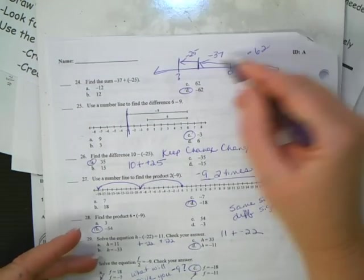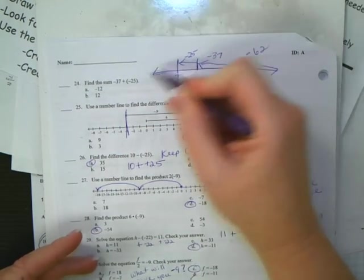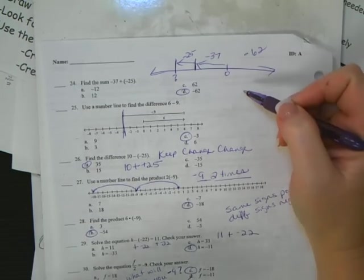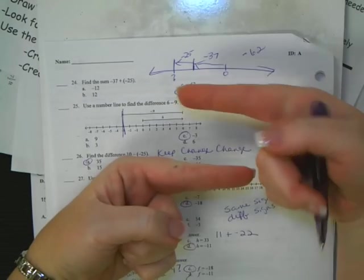We can also do keep, change, change, like we do here in number 26. Instead of 10 minus the negative 25, that turns into keep, change, change, 10 plus positive 25, which is 35.